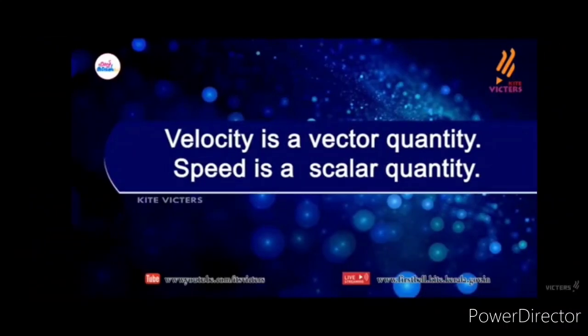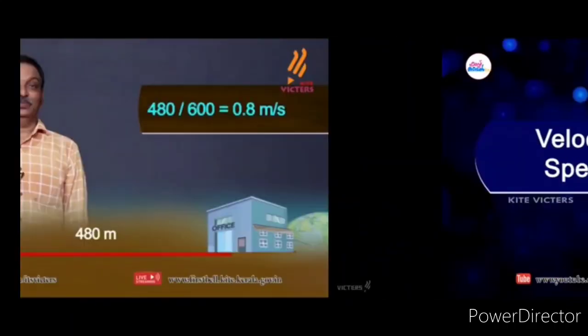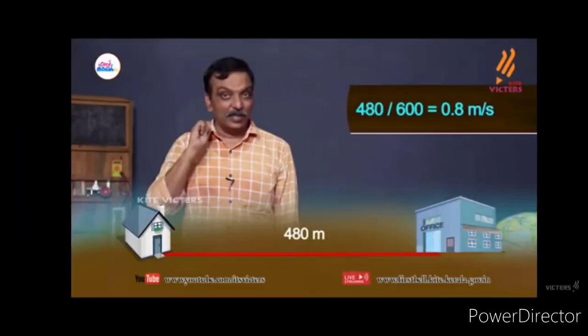Now we will calculate speed: 480 m divided by 600 s equals 0.8 m per second. Velocity equals displacement by time: 480 by 600 equals 0.8 m per second.